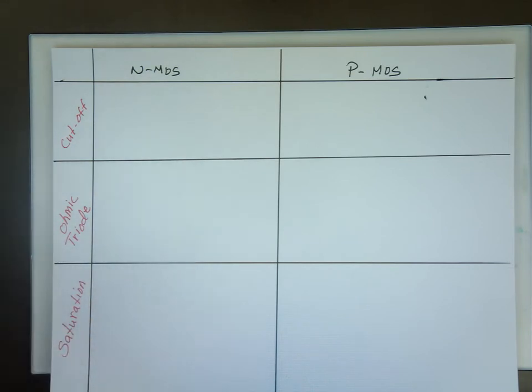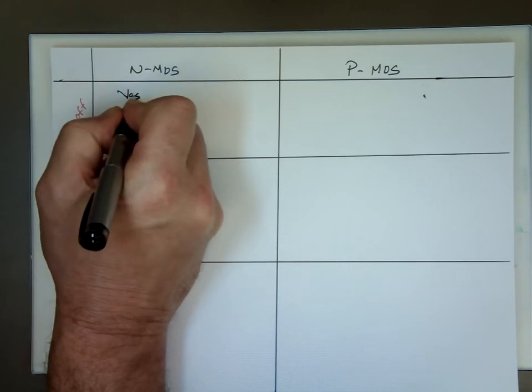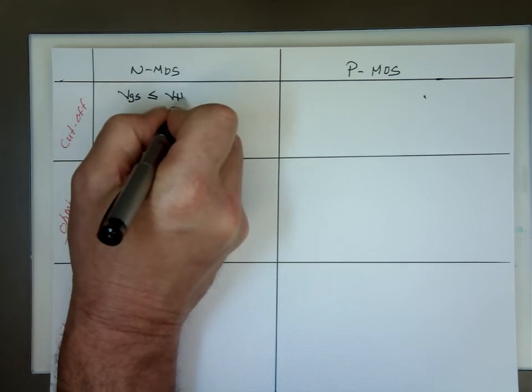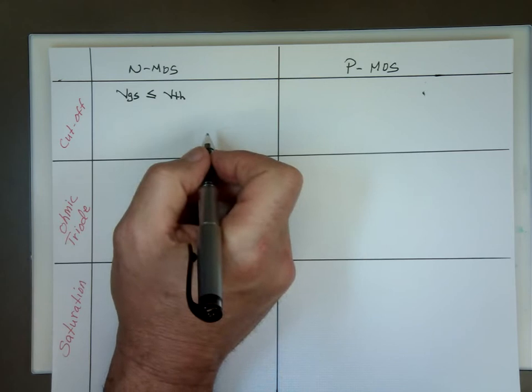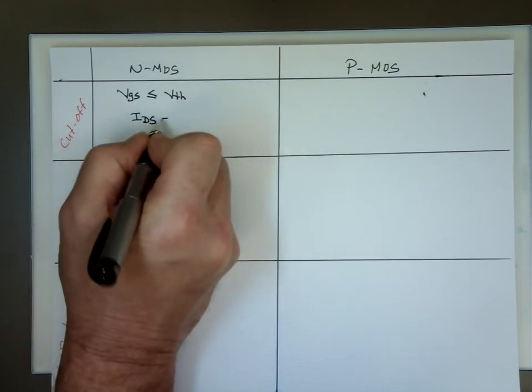How do we know which mode we are in? Well, that's easy. If VGS is less than or equal to a threshold voltage, we are in the cutoff region, which means ID is equal to zero.